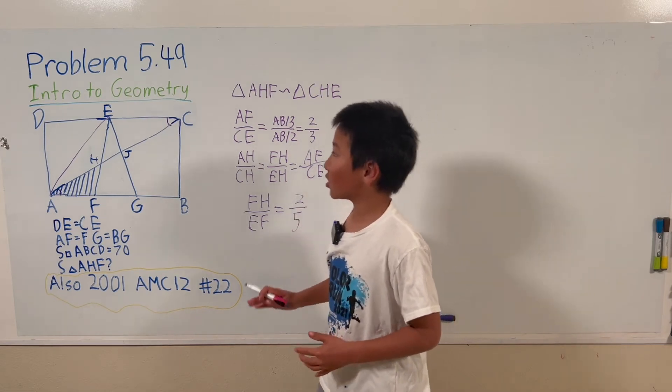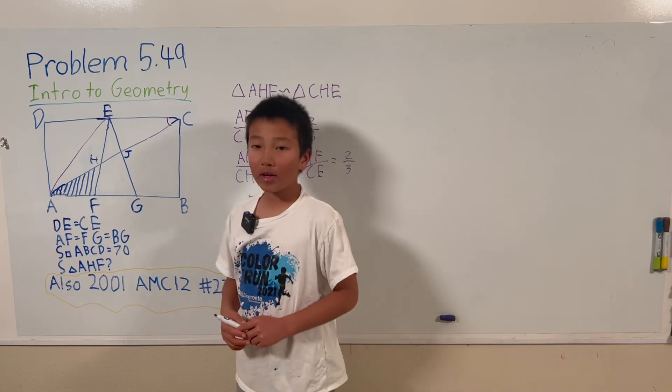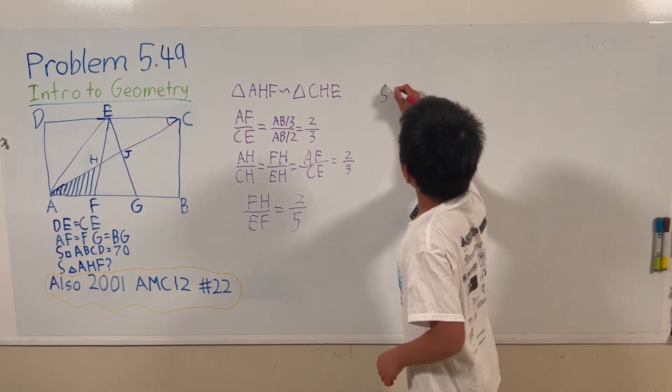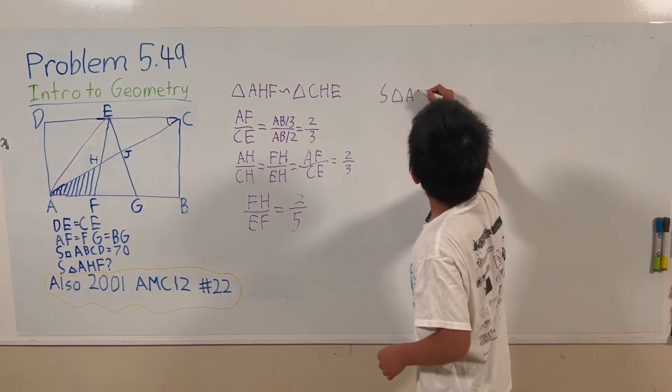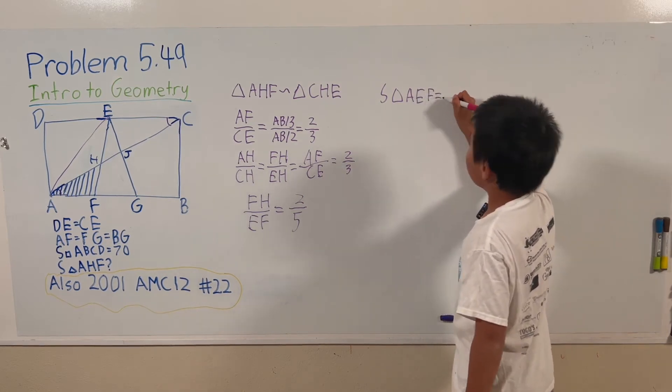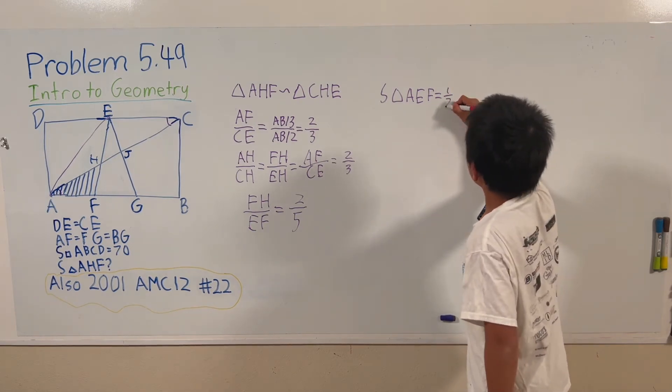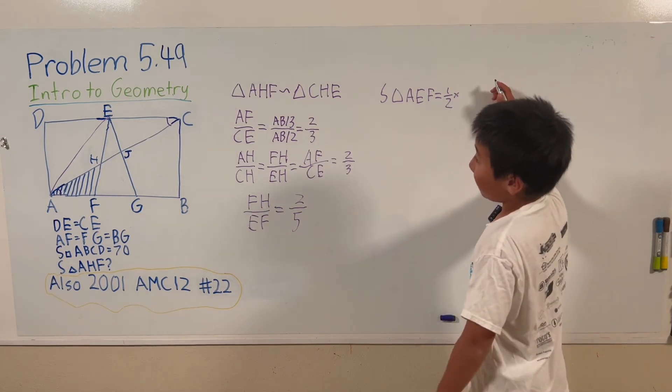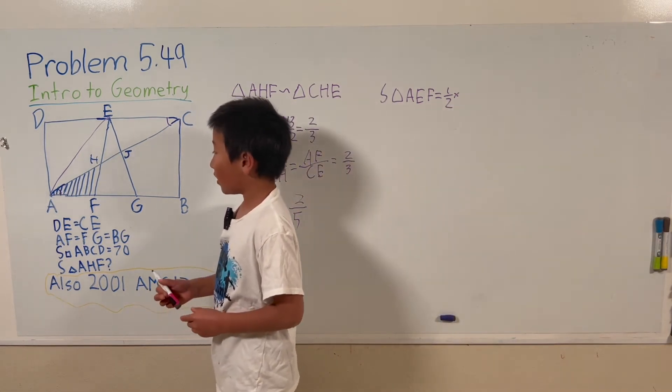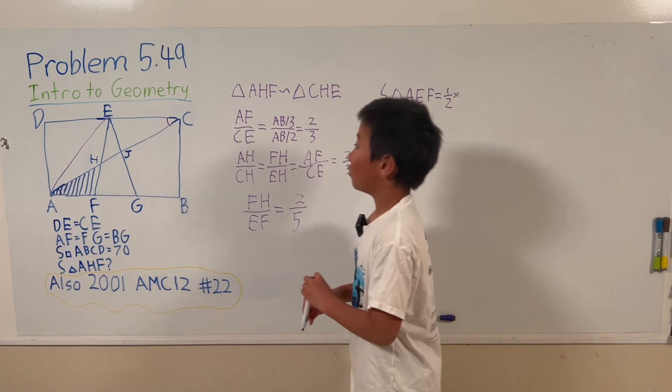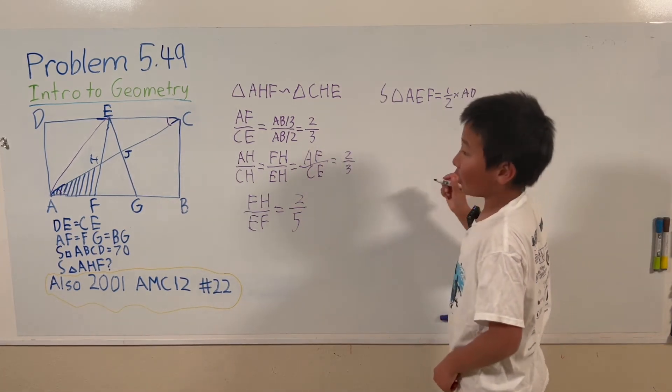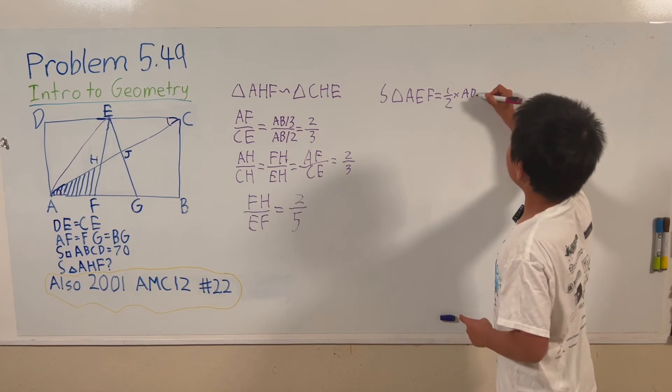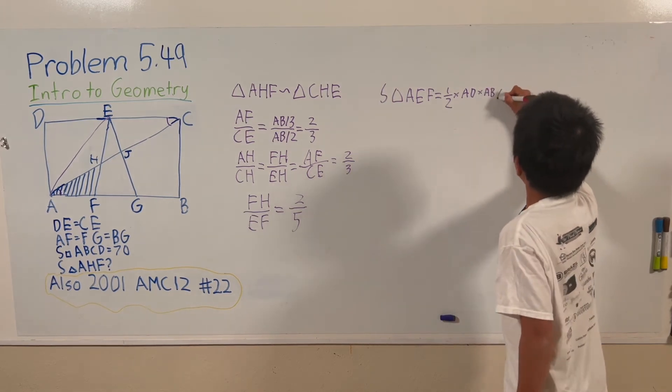Ok so now we just need to find the area of triangle AEF. The area of this triangle equals one-half times the height, which is AD, and then the base is AF, which is a third of AB, so times AB over 3.